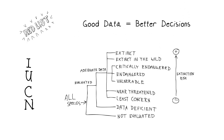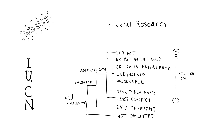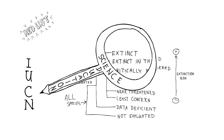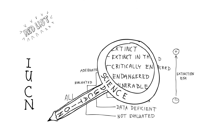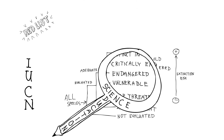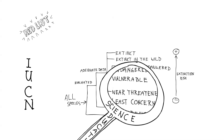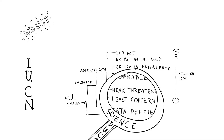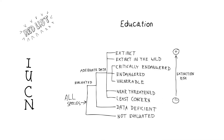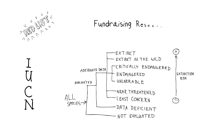The IUCN highlights the crucial nature of research. If you have the right data, you can place known species into one of seven different categories — categories that are really helpful for education, as well as for making good protection policies, and even for helping fundraise for more research, more education, and conservation.